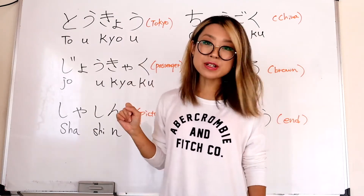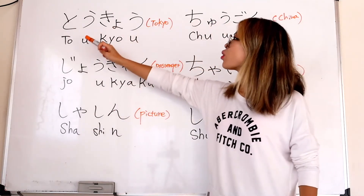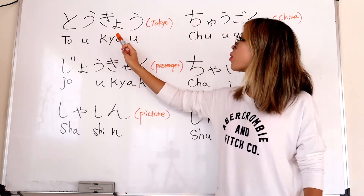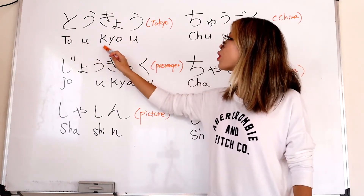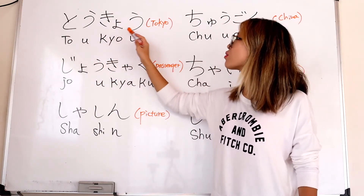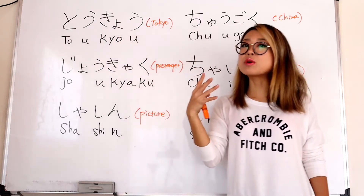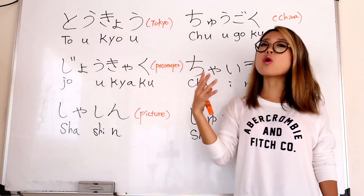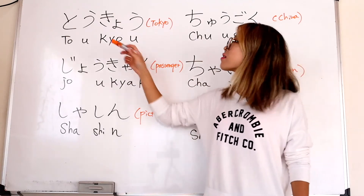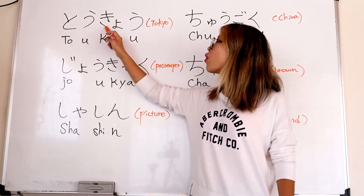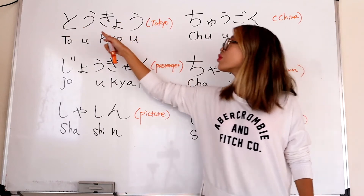I wrote some vocabulary notes — let's check together. First: To-kyo. I wrote it as to-u-kyo-u because the hiragana uses 'u', but this 'u' is usually pronounced as 'o'. So we say Tokyo.